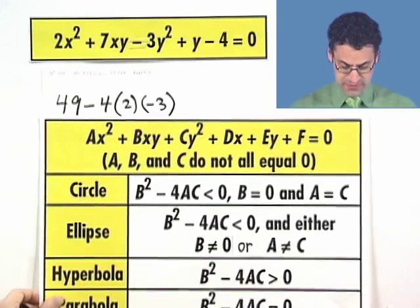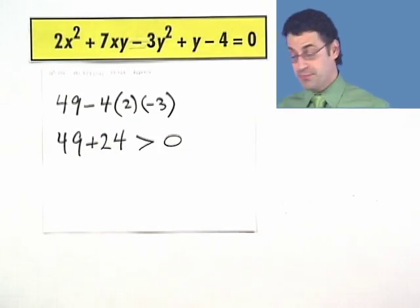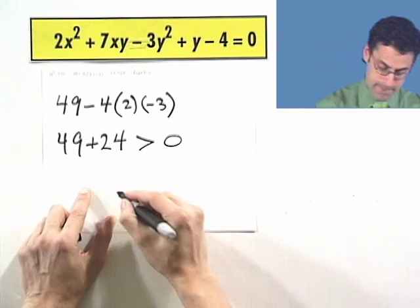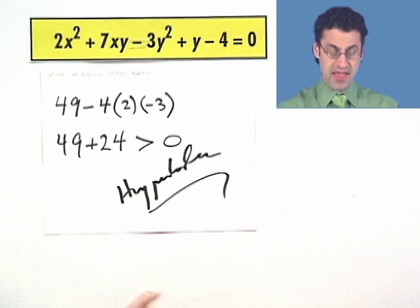And when you look at this chart, you see that if in fact that quantity is positive, we're a hyperbola. We're a hyperbola. So you can identify a conic section if you're given a very general quadratic in x and y by just looking at the coefficients carefully and computing the discriminant. Cool.